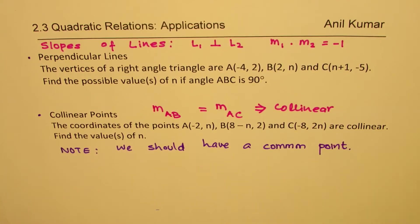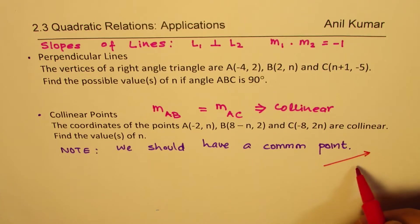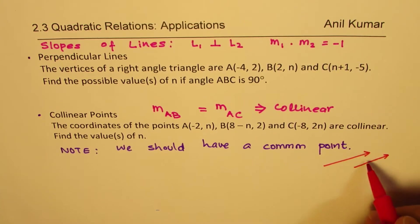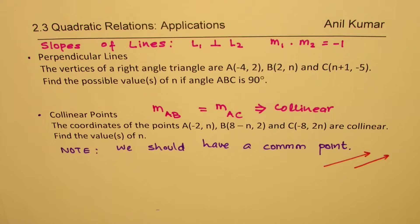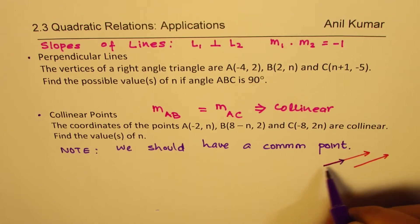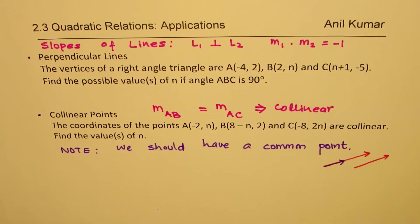If you don't have a common point, the two lines could be parallel, but they are not collinear. But if you have a common point, then they are collinear. The common point is very important.